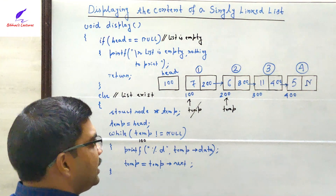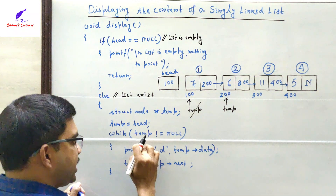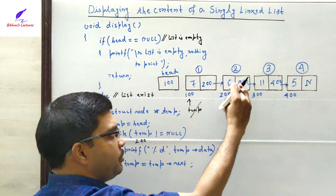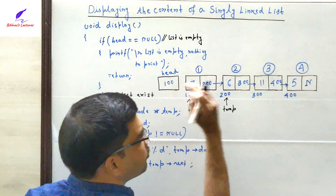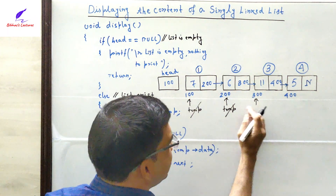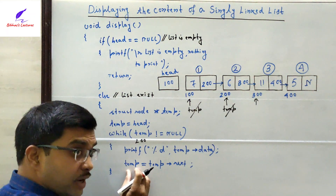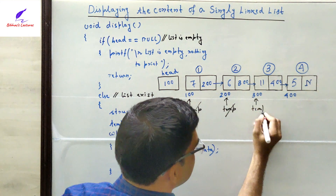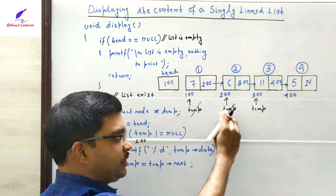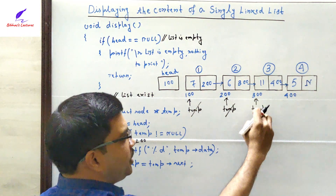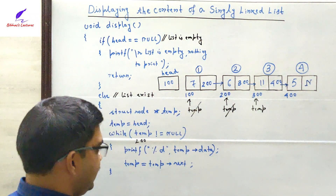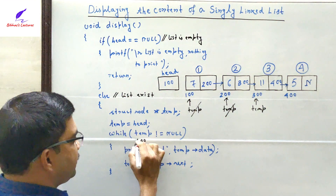Again, temp's value (200) is checked — it is not equal to null, so temp is pointing to a valid node. Its data part (temp->data) is printed, and then temp is shifted to the next node via temp = temp->next. Temp->next is 300, so the new value of temp becomes 300. Remember: if temp points to node N, then temp->next points to node N+1.